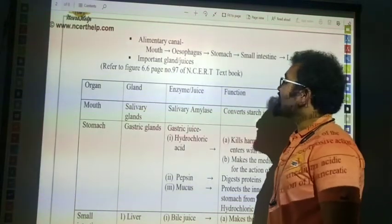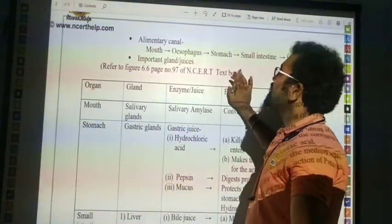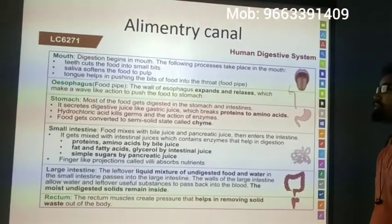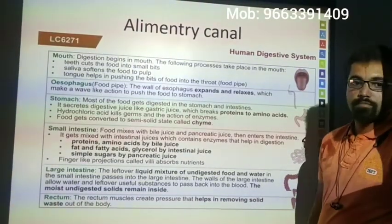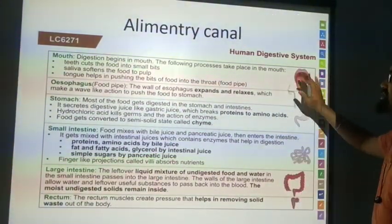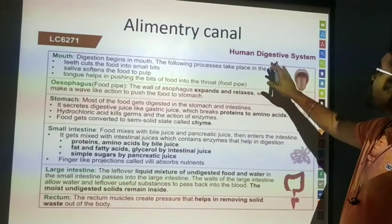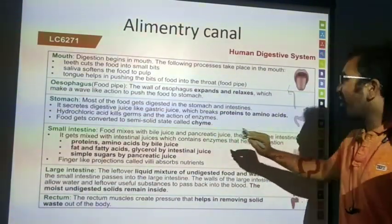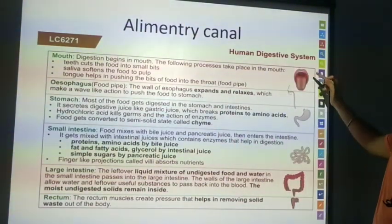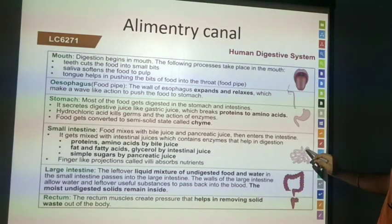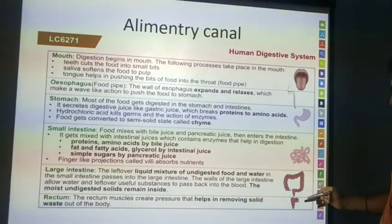Now, the alimentary canal — this is the human digestion system. The parts are: mouth, esophagus, stomach, small intestine, large intestine, and rectum.